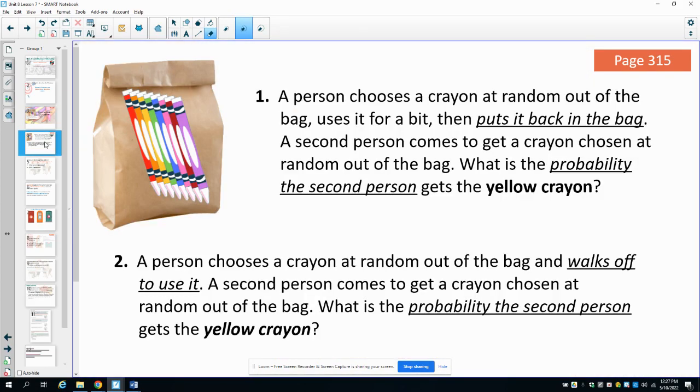The events in number one says that a person chooses a crayon at random out of the bag, uses it for a bit, and then returns the crayon or puts the crayon back in the bag. A second person comes to get a crayon now out of the bag and selects at random. What's the probability that the second person selects the yellow crayon? So now the bag has been reset. We still have all of these crayons in it. There is one yellow crayon out of the eight crayons in the bag. So the probability that that person selects the yellow is one out of eight.